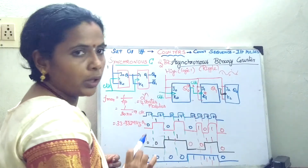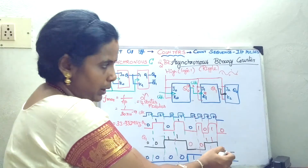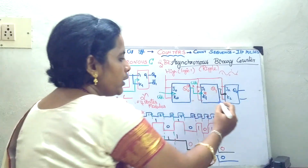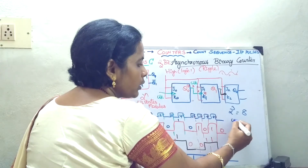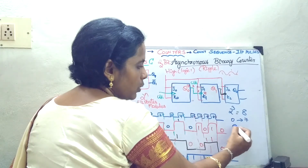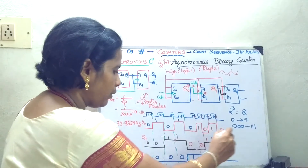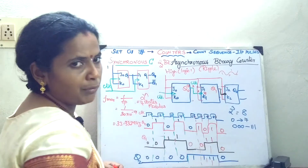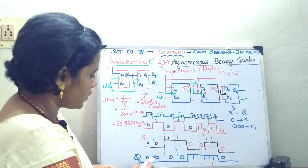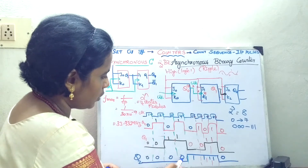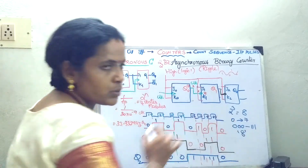For a 3-bit counter: the first flip-flop toggles for every clock pulse, the second flip-flop toggles for every 2 clock pulses, and the third one toggles for every 4 clock pulses. With a 3-bit counter, it is 2 power 3 — it can count 8 states, so it is a mod-8 counter counting from 0 to 7, that is 000 to 111. The states are: 0-0-0, 0-0-1, 0-1-0, 0-1-1, 1-0-0, 1-0-1, 1-1-0, 1-1-1 — 8 states total.